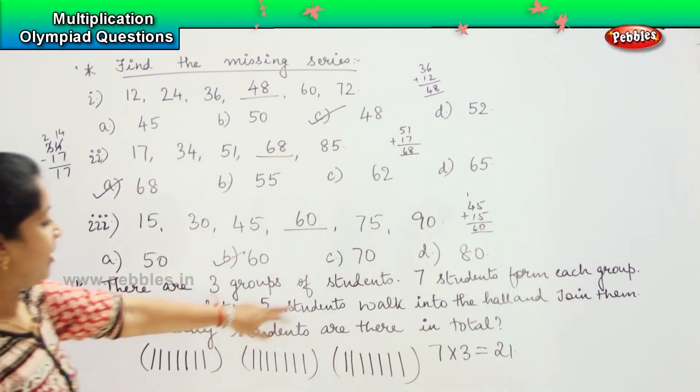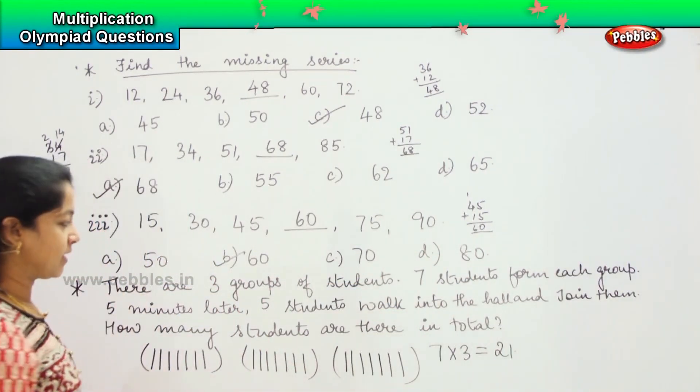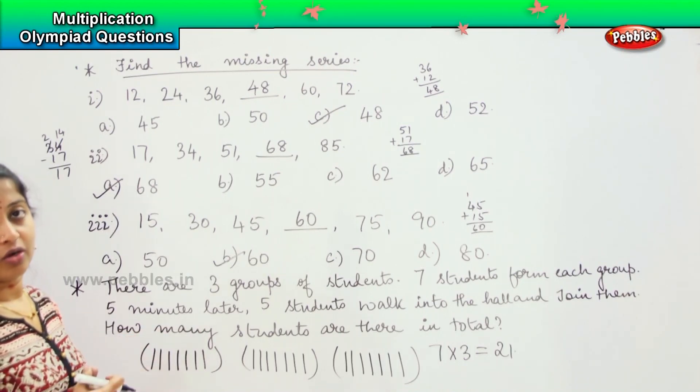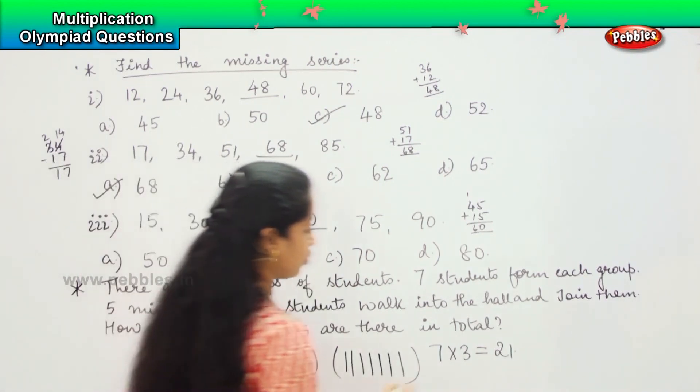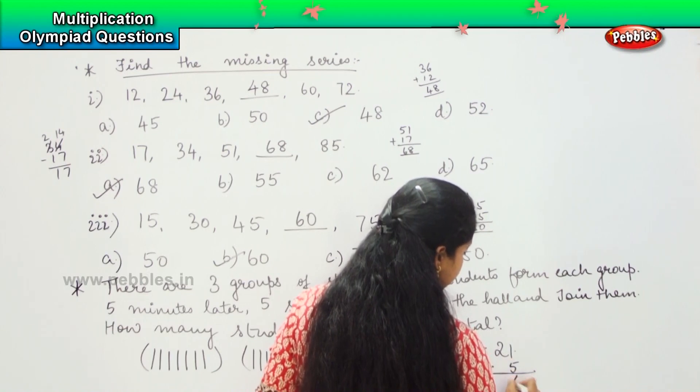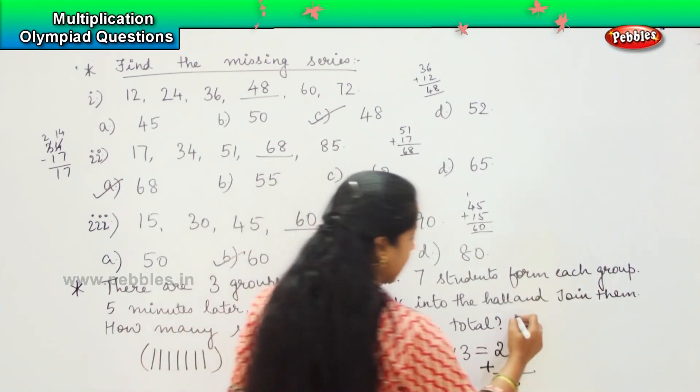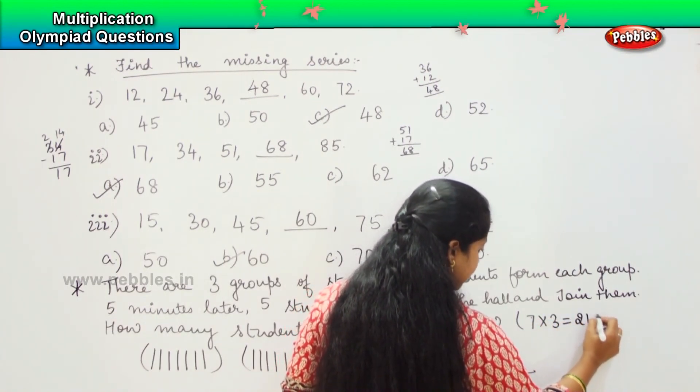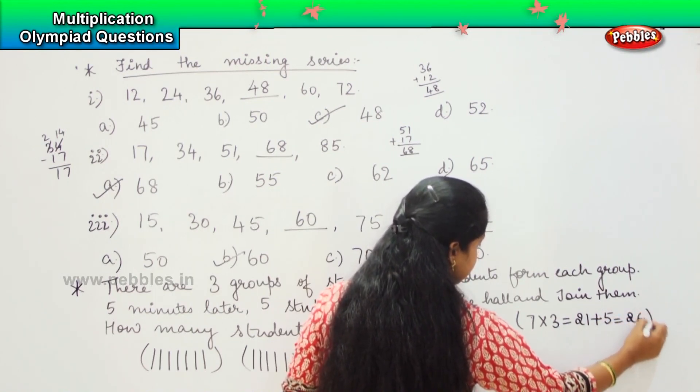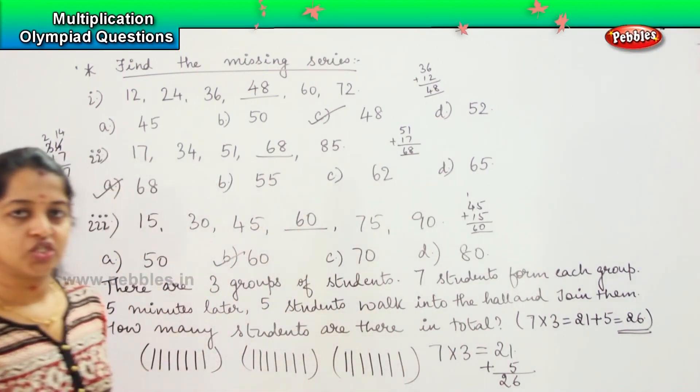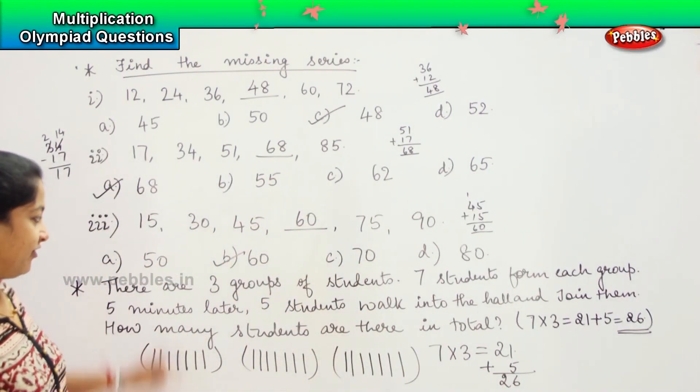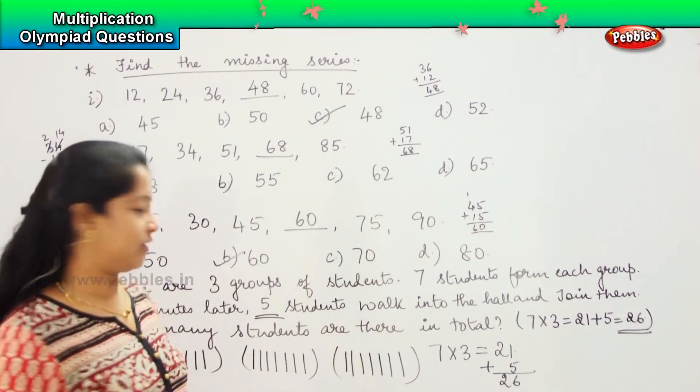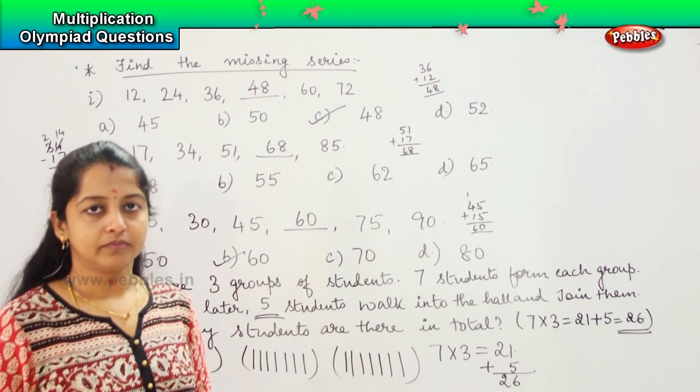5 minutes later, 5 students walk into the hall and join them. So which means after 5 minutes, 5 new children are coming in again. So you need to find how many children are there in all. Now what you have to do is you need to add these 5 children. Which means that I am having 7 into 3, which is 21 plus 5, which is 26. So I have 26 children in total. First, I will be multiplying and then I will be adding my product with the extra 5 children who are walking inside. Is it clear, children?